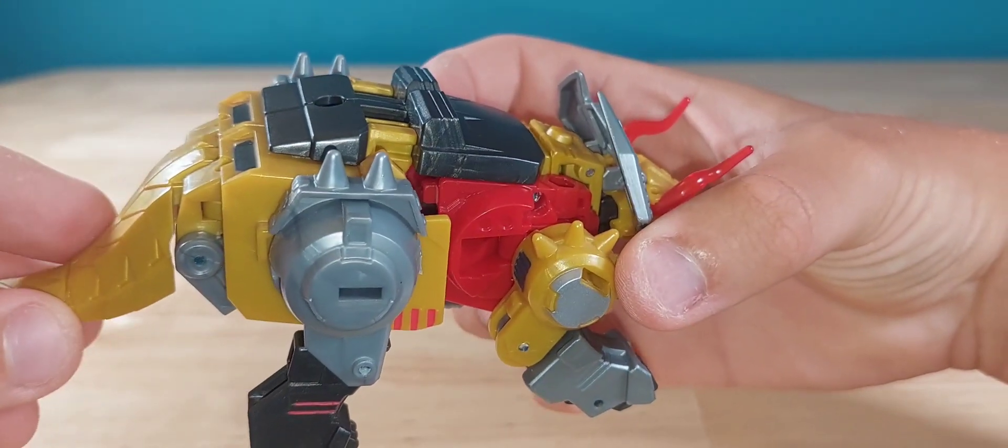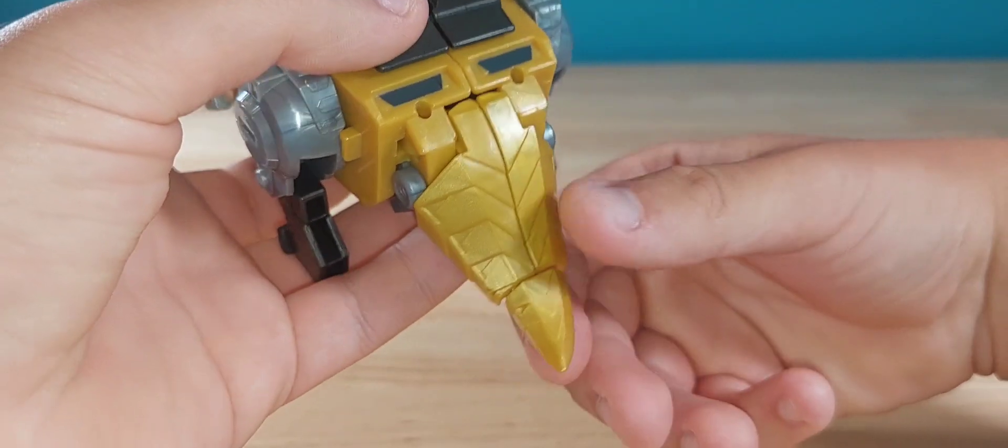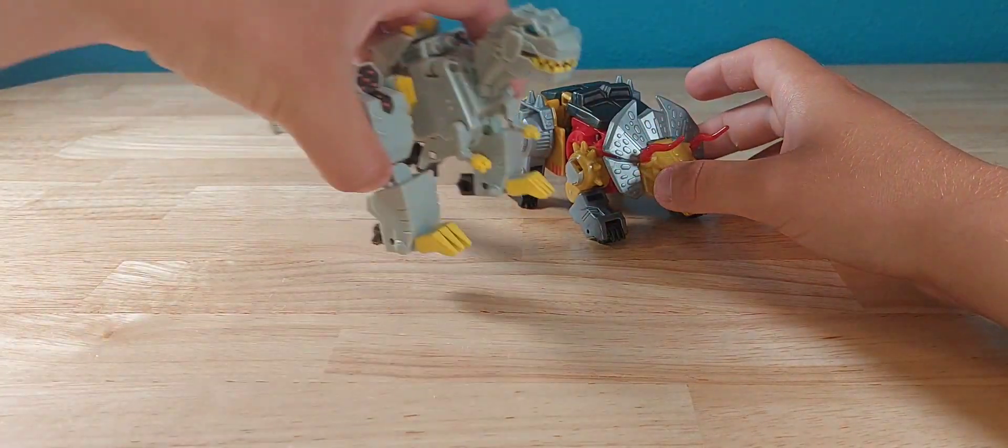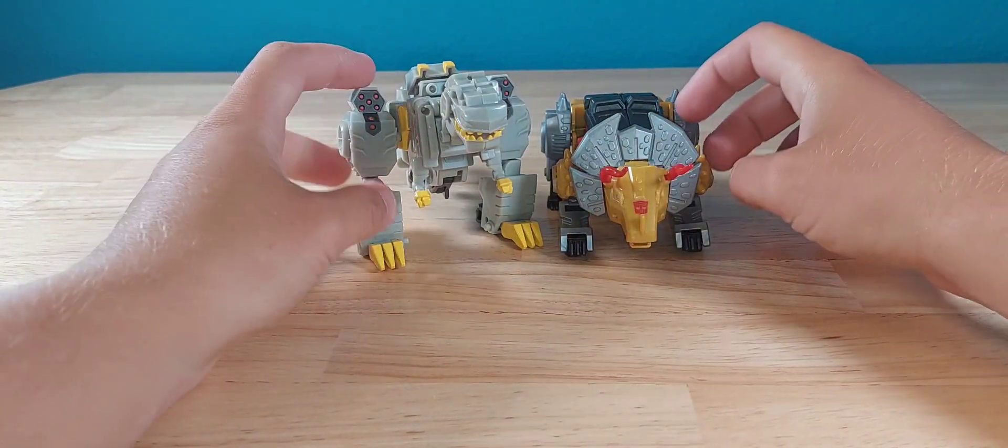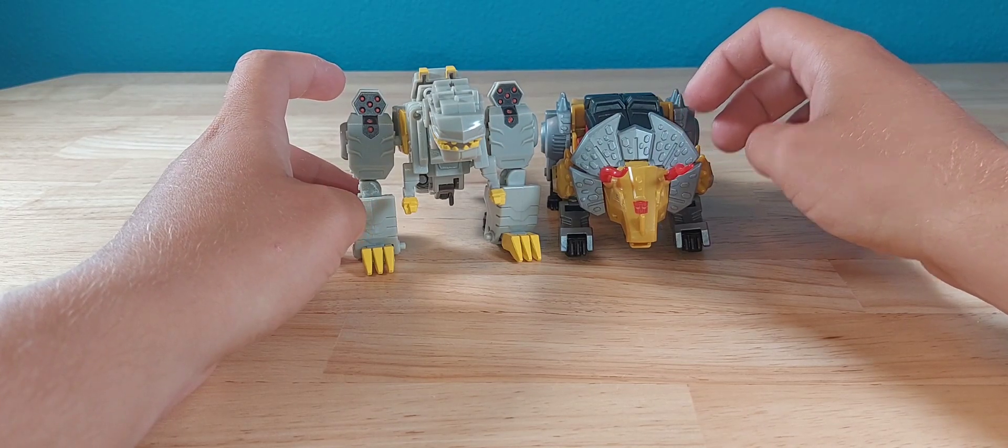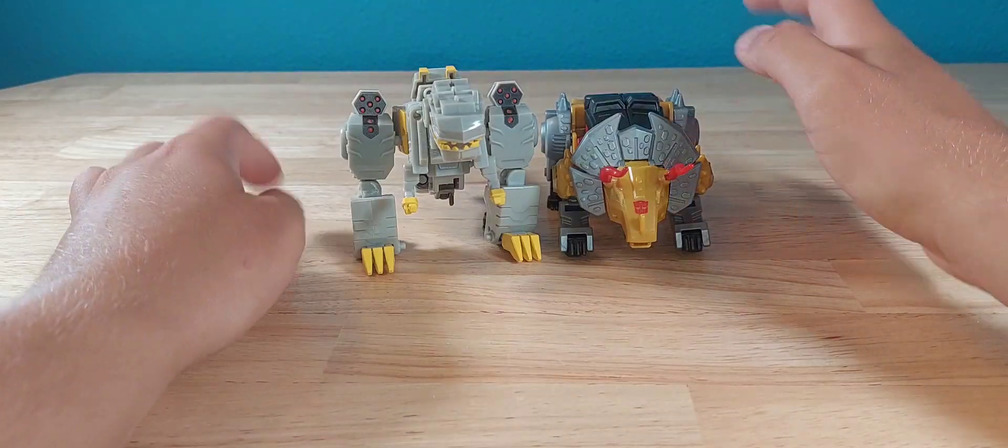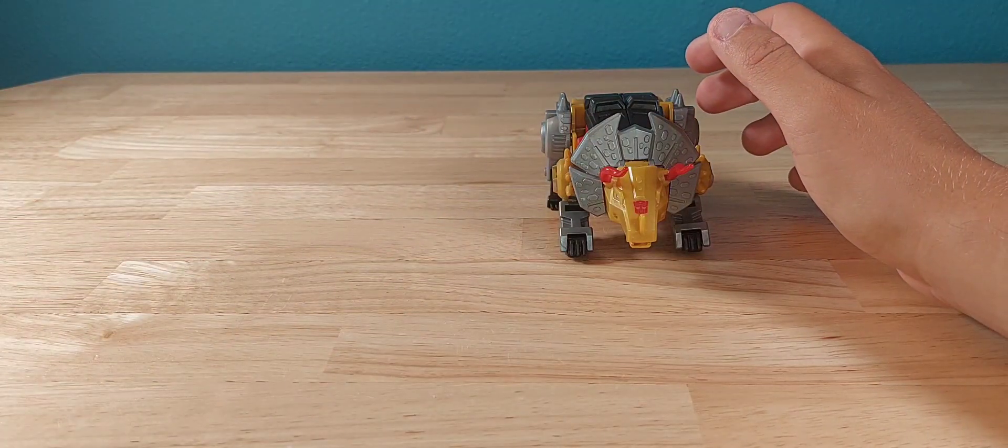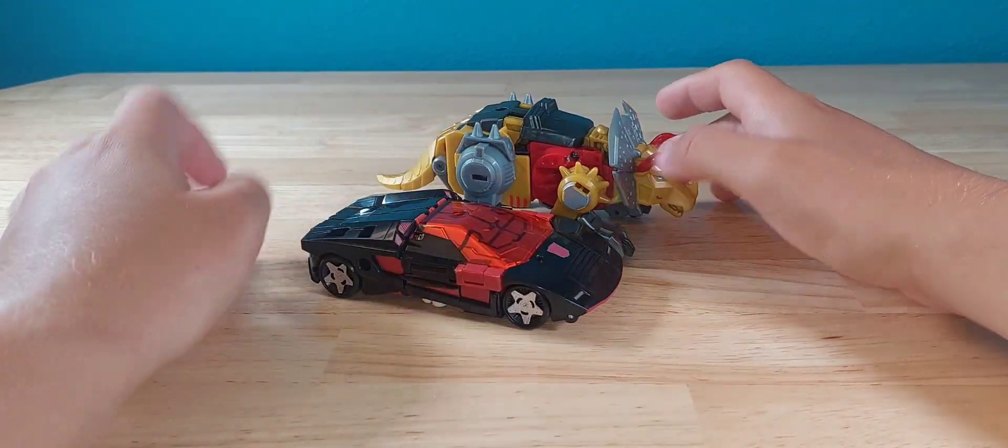For a real quick size comparison, here we have Grimlock who I mentioned before. These are the only two Cyberverse figures I have because the other Dinobots were kind of crappy. They weren't aimed for me and that's perfectly fine. I wish they gave us the Dinobots in this type of styling, but whatever. Here we have Sideswipe. Not too shabby.